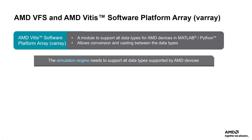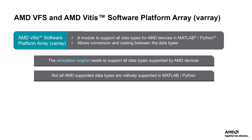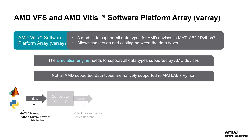The simulation engine needs to support all data types that are supported by the AMD devices. However, not all AMD supported data types are natively supported in MATLAB and Python. So, the input data from the MATLAB array or the Python NumPy array is converted to a specific array named V-Array, which is the Vitis array that supports all AMD data types, before being processed by the simulation engine.